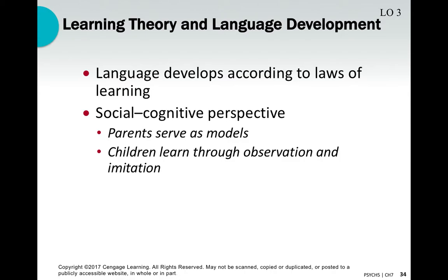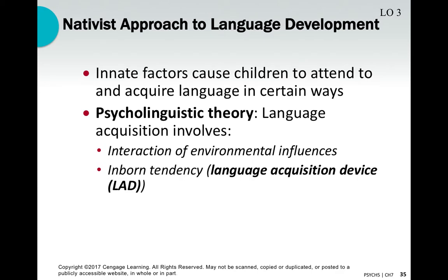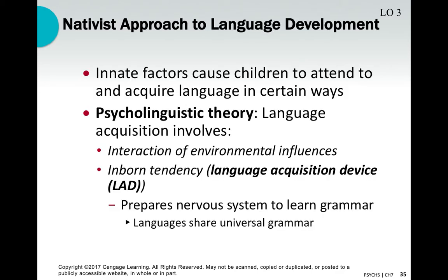There are some theories about language acquisition. One theory is that the laws of learning apply — language is learned through reinforcement and modeling. When a baby first says 'mama' or 'dada,' the parents get happy, praise the child, pick them up, and love on them. That's reinforcement, and of course the baby is reinforced to continue using and learning language. From a social cognitive perspective, parents are models — children imitate what they see and hear, and over time develop language through this monkey-see-monkey-do process.